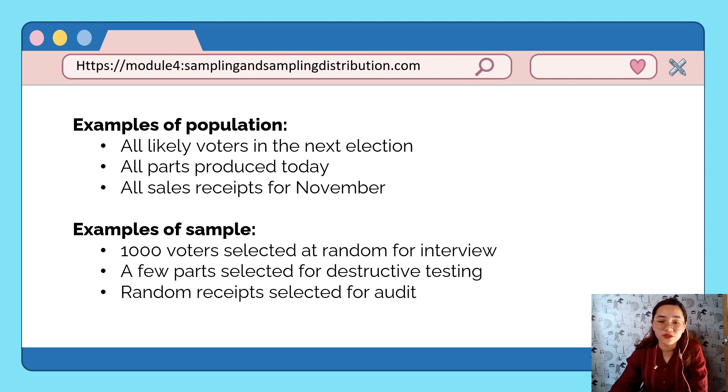All sales receipts for November. For example, we want to select for an audit, so we get a portion, let's say 15 receipts at random - that's our sample. Of course, from our population and sample, we can obtain some data that will describe the whole population as well as our sample. So what do we call this data?